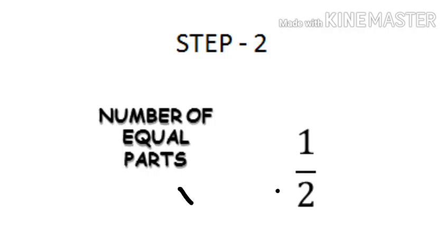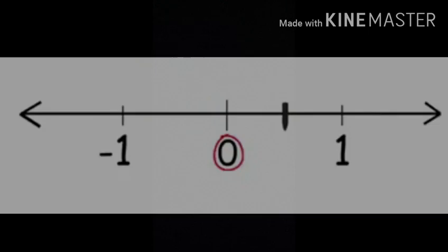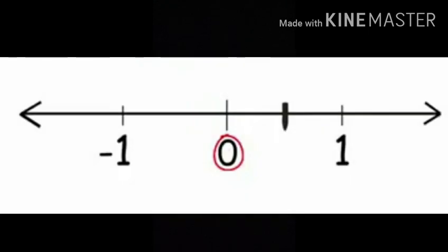Step number 2: See the denominator. Denominator tells us how many equal parts we need to divide each division of number line in. With denominator 2, we will divide the space between 0 and 1 in two equal parts.